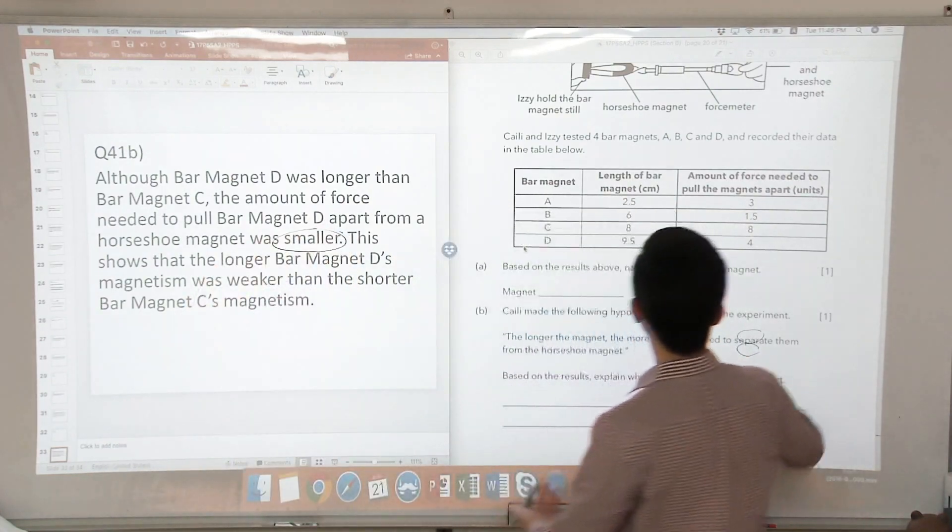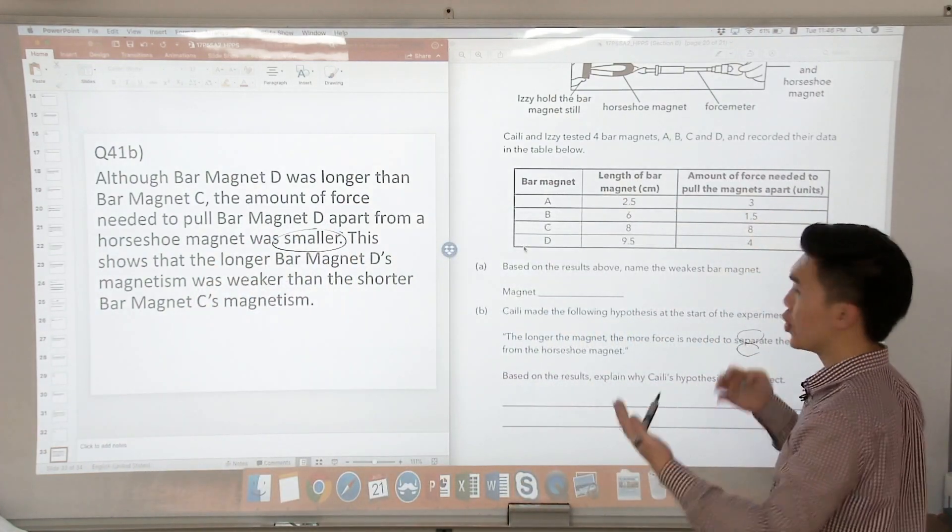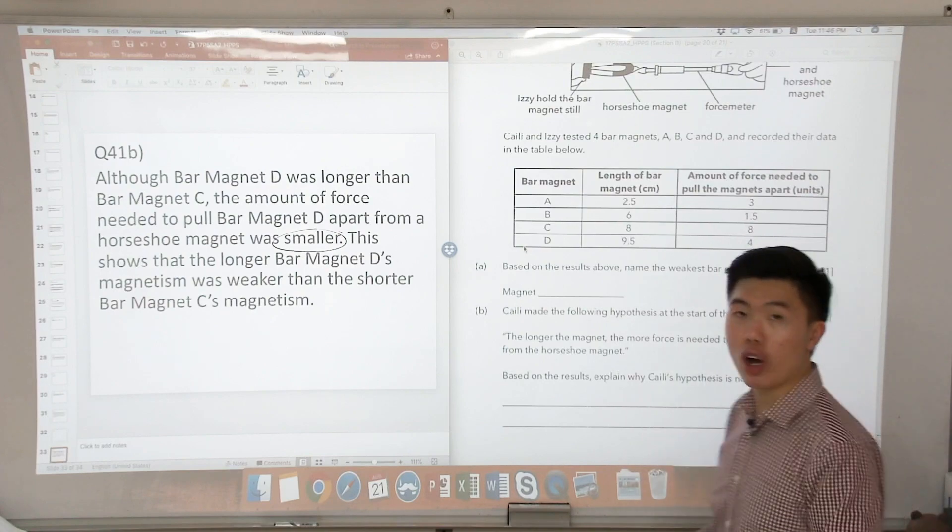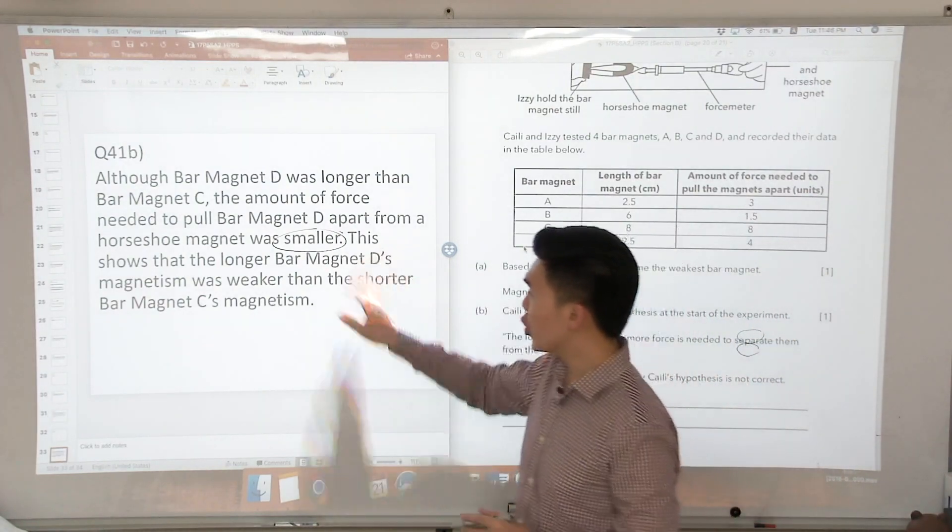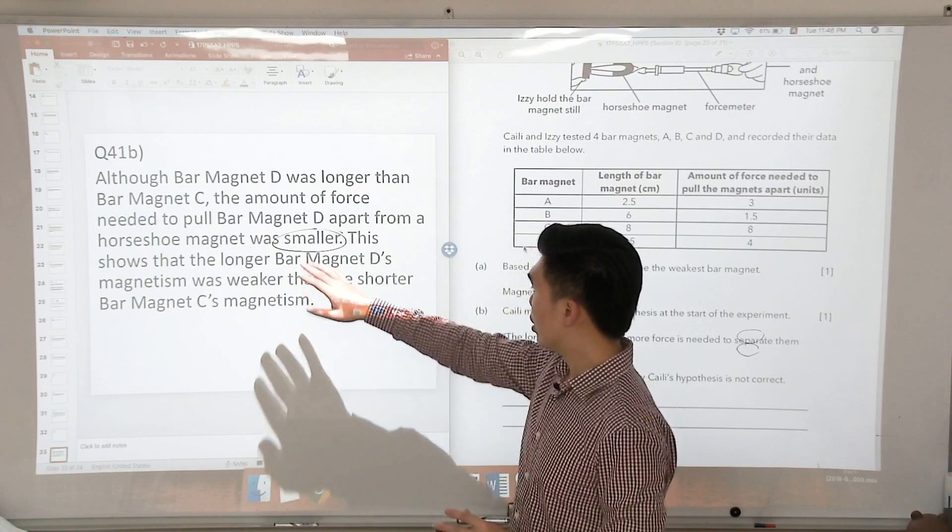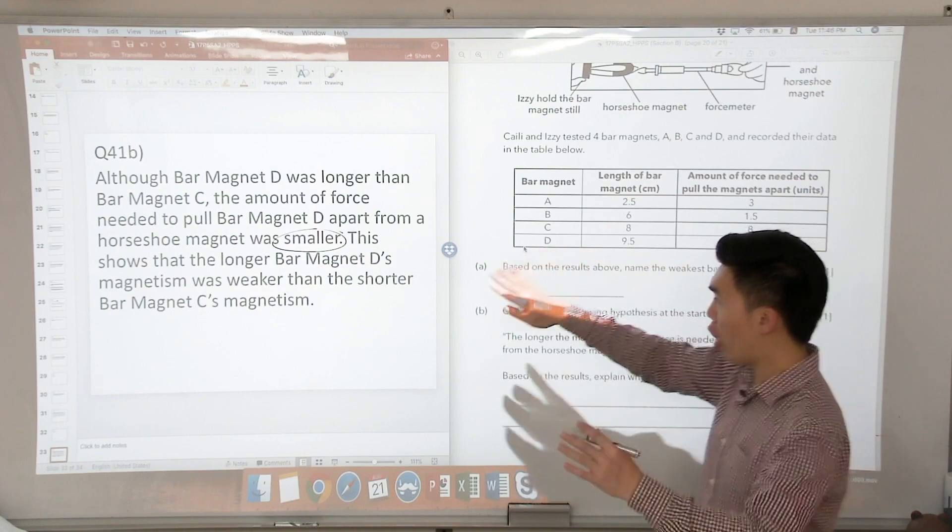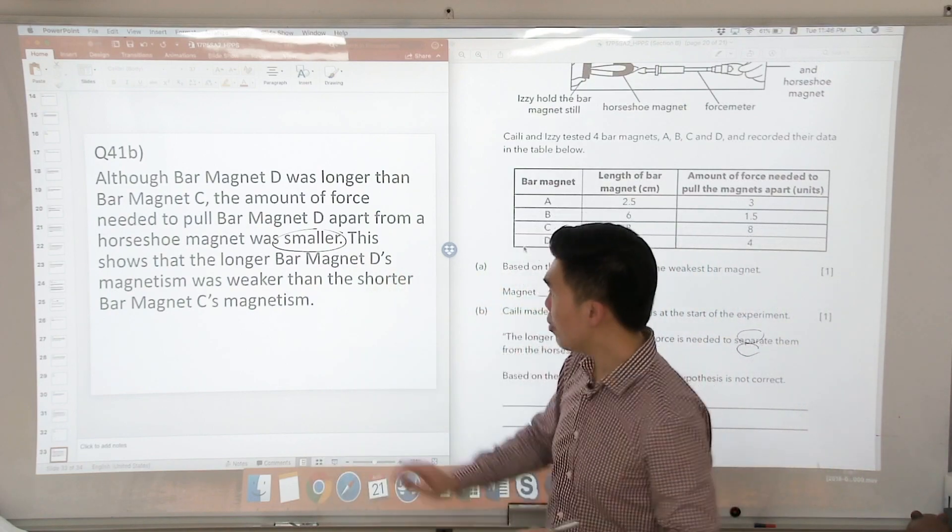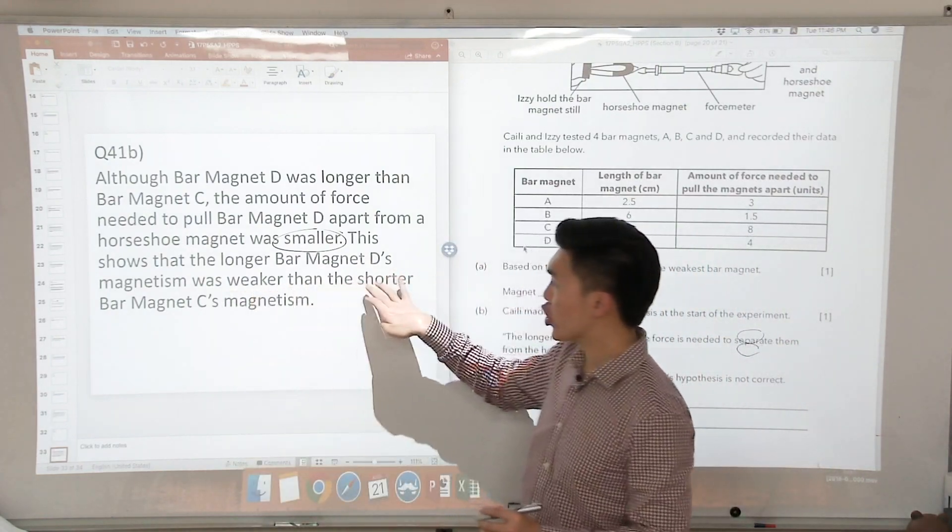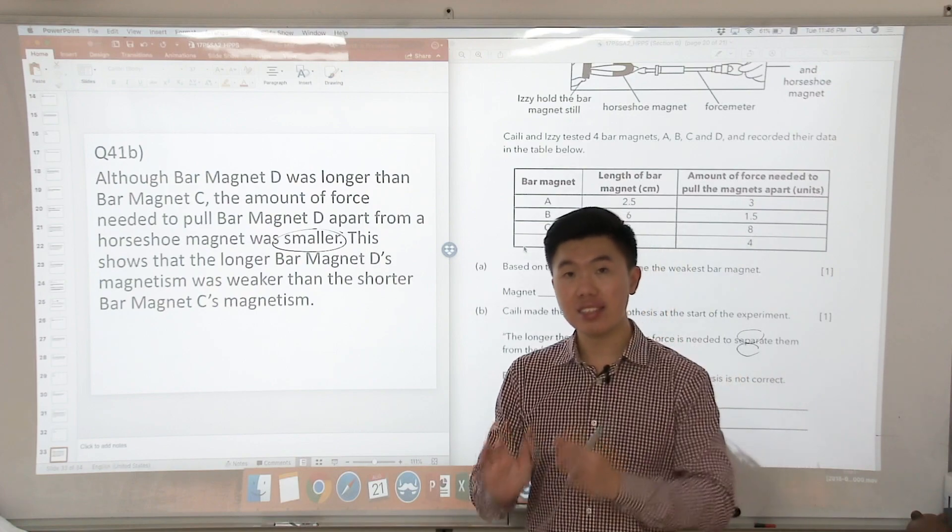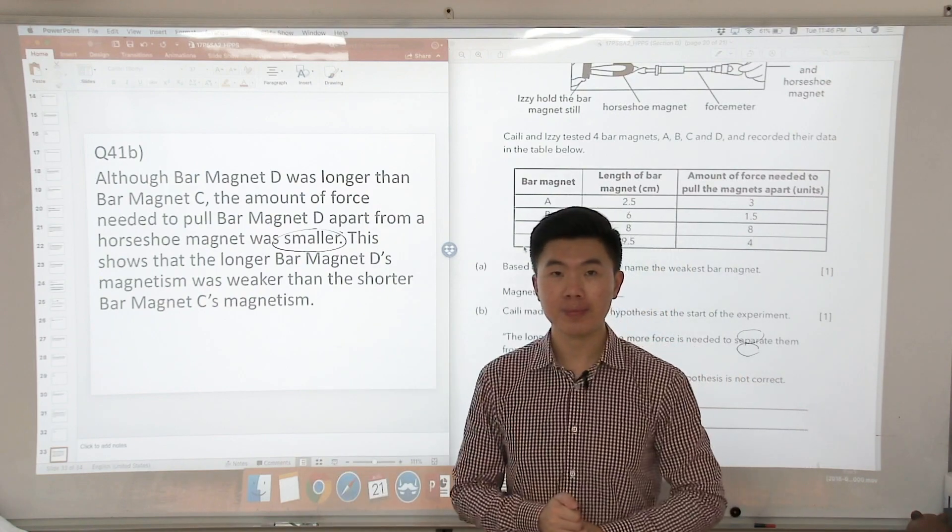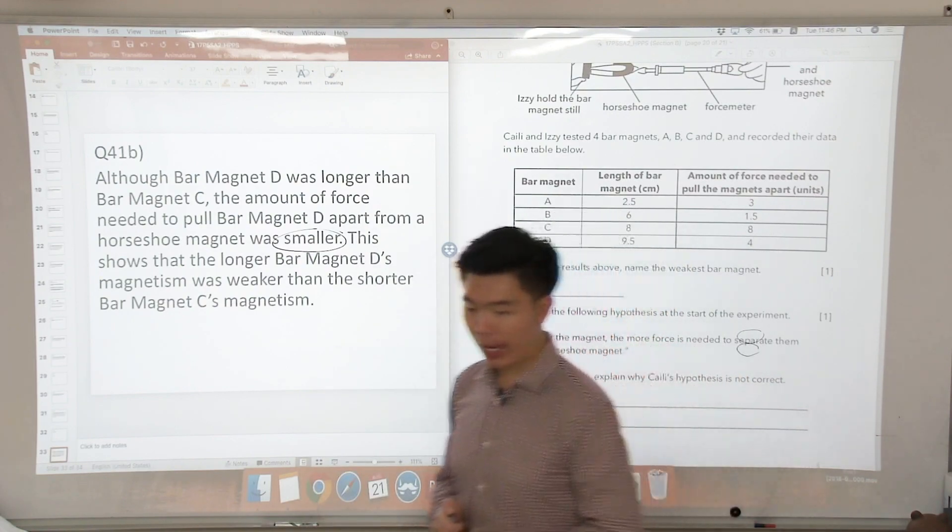Make sure that you use the comparison terms. Do not just tell me the values. Don't tell me 8 units. Don't tell me 4 units. Give me the comparison. So in this case, it's smaller. So this shows that the longer bar magnet D's magnetism was weaker than the shorter bar magnet C's magnetism. So that is for part B.